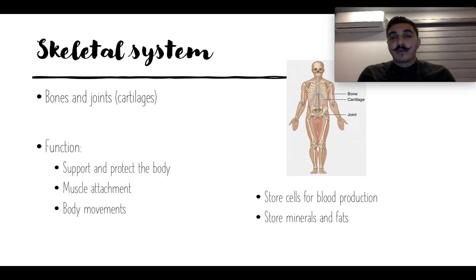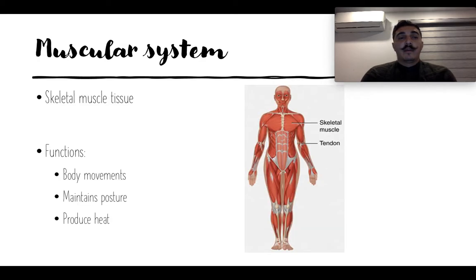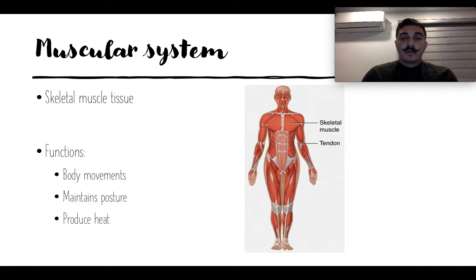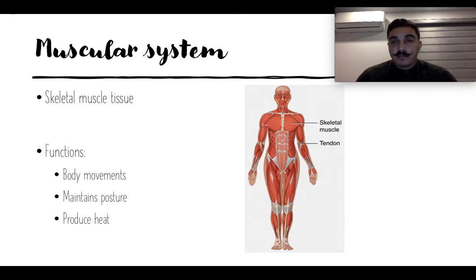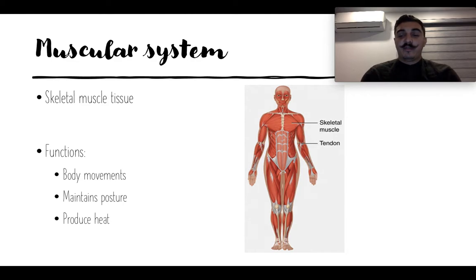Inside the bones we have our stem cells. The muscular system is mainly skeletal muscle tissue. All those muscles mainly serve for body movements, to keep our posture, and to produce heat in our body so we're not freezing to death.